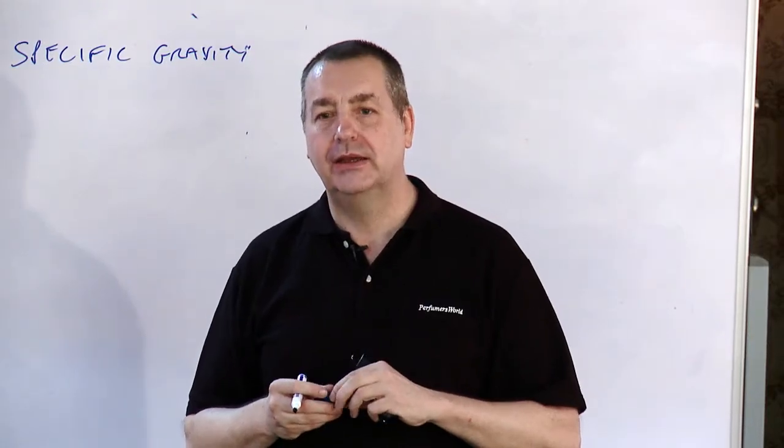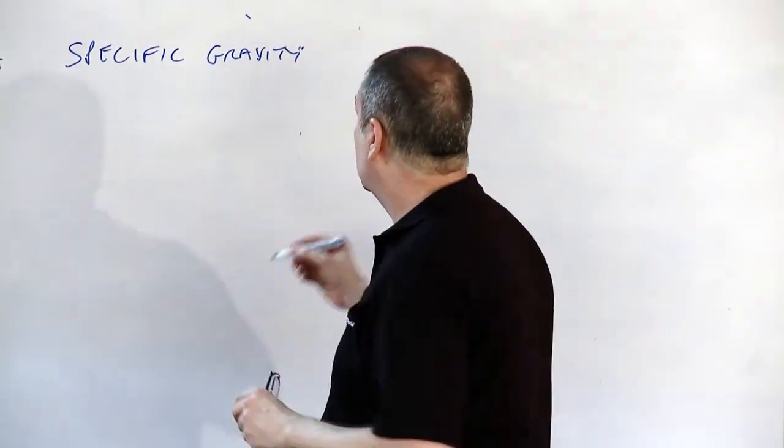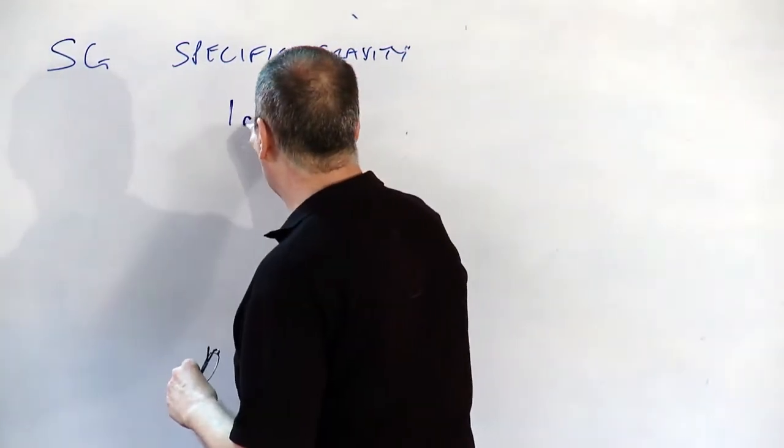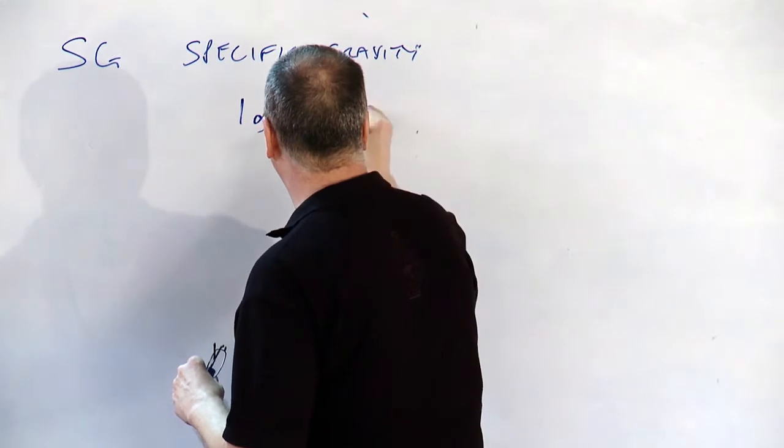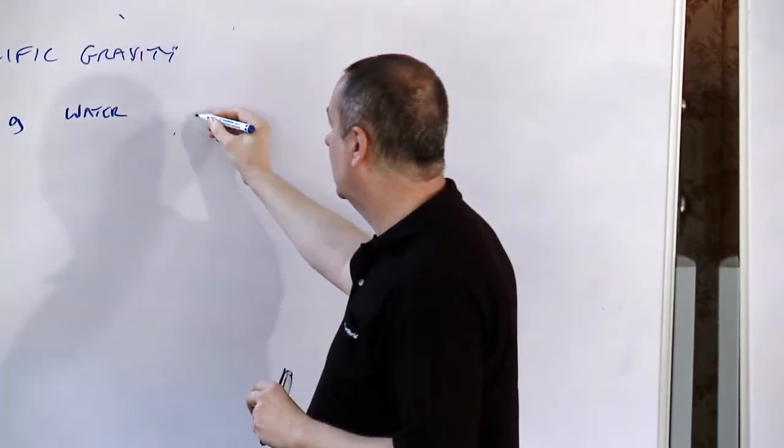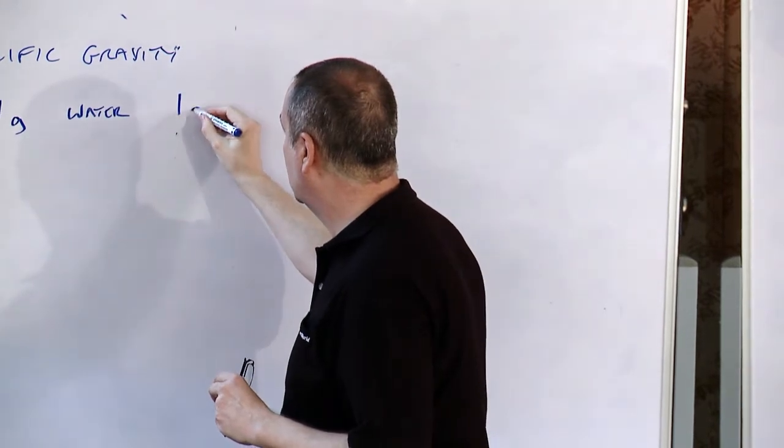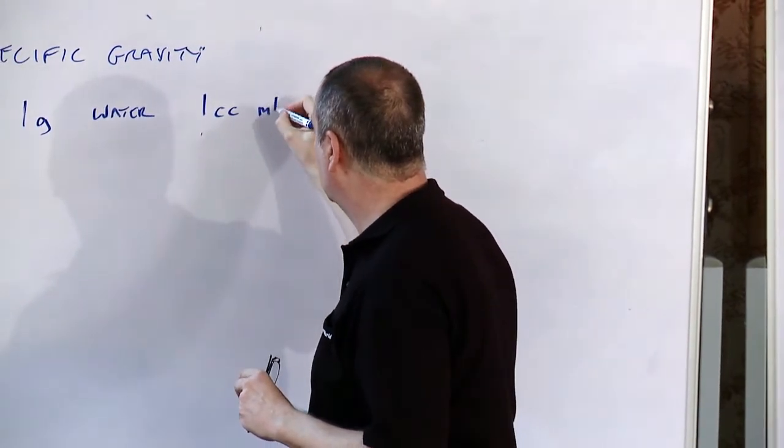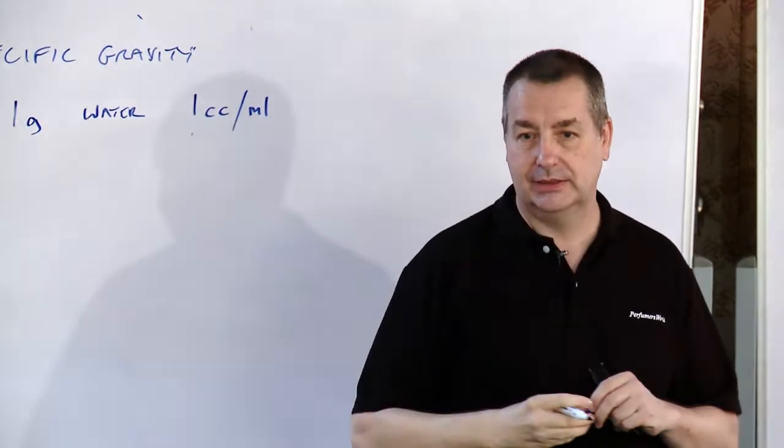It's the density. So, one gram of water at room temperature will measure one cc, which is the same as one milliliter.